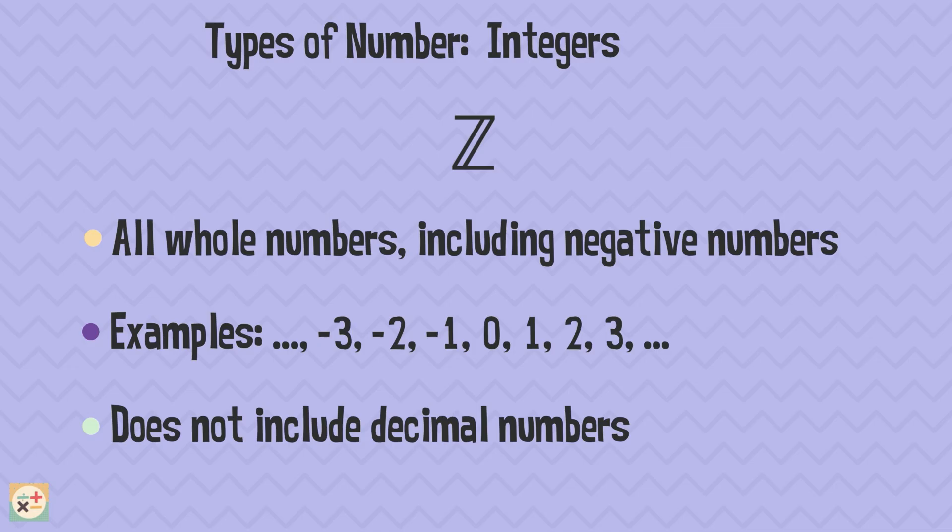Integers include positive numbers, negative numbers, and zero. However, they do not include decimals.